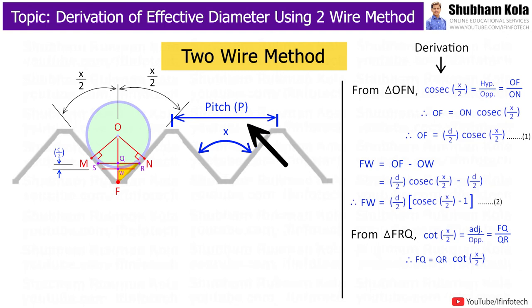Here, pitch of thread, that is distance from peak of one thread to the corresponding peak of next thread. And distance sr is p by 2. And if I consider this qr distance, it will be equal to distance p by 4. Therefore, our expression will be Fq is equal to p by 4 cot alpha by 2. So, this is our equation number 3.